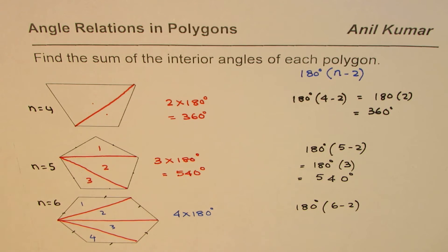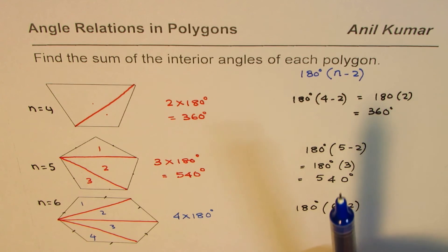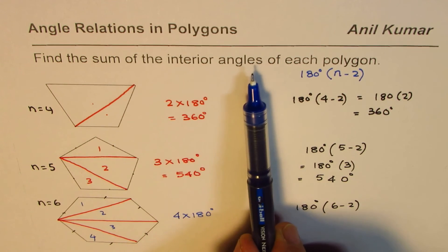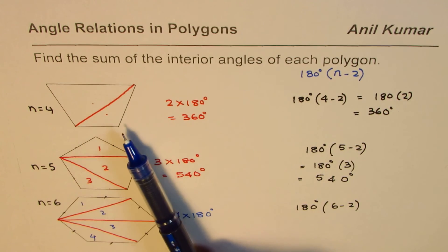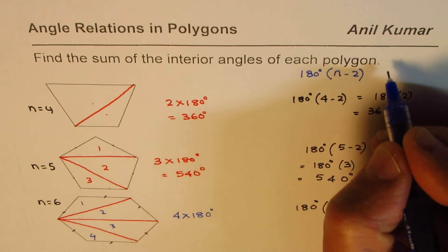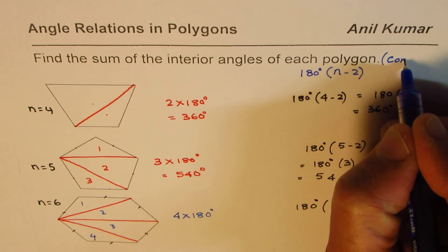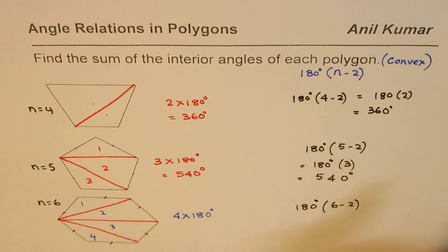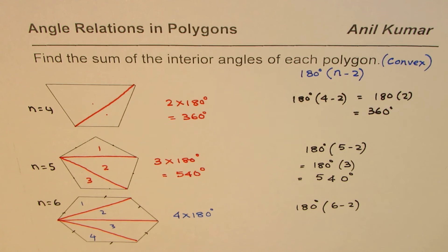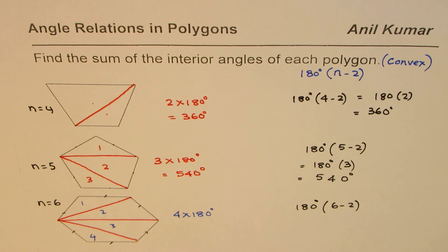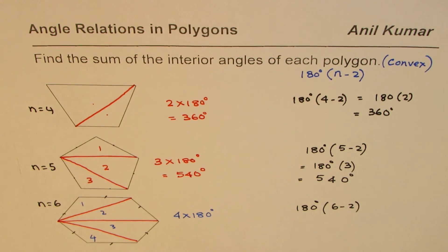The sum of interior angles of a convex polygon is 180 degrees times n minus 2, where n is the number of sides. I'm Anil Kumar, and I hope that helps. You can share and subscribe to my videos. Thank you, and all the best.